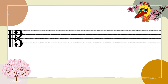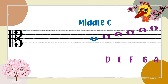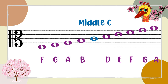Now that you know middle C is the landmark note for alto clef, let's find the remaining notes above and below the line. From middle C, counting up in ascending order, we have D, E, F, G, and A. Then from middle C, counting down in descending order, we have B, A, G, F, and E.